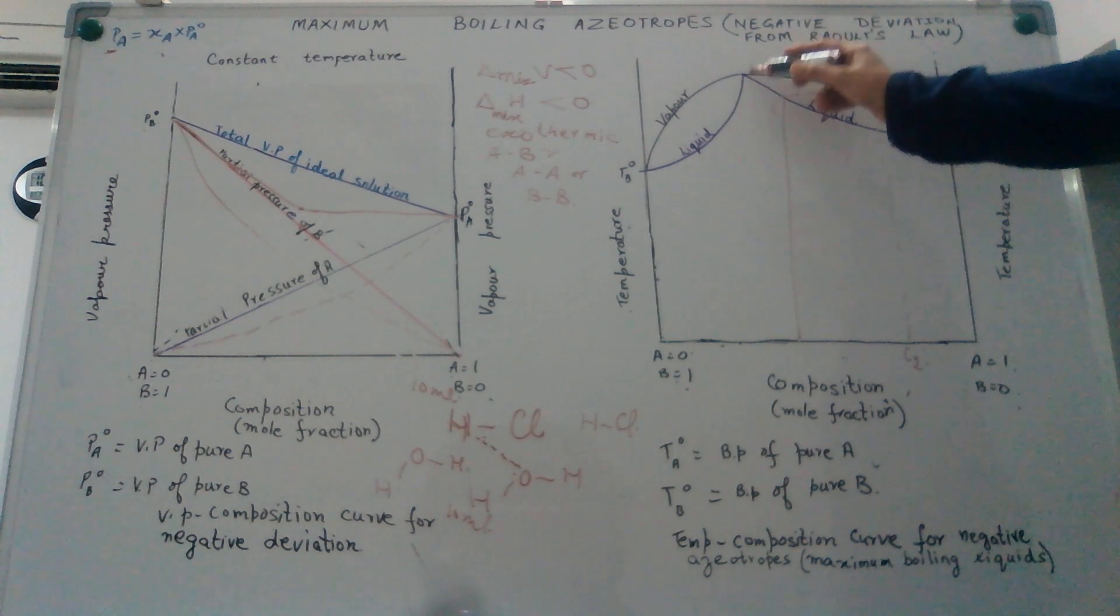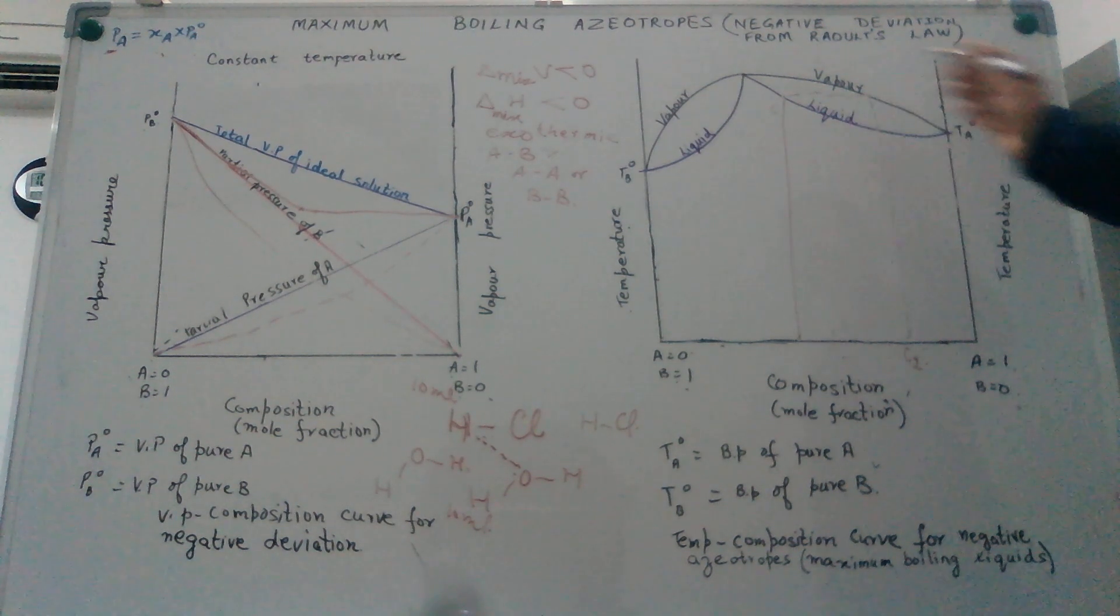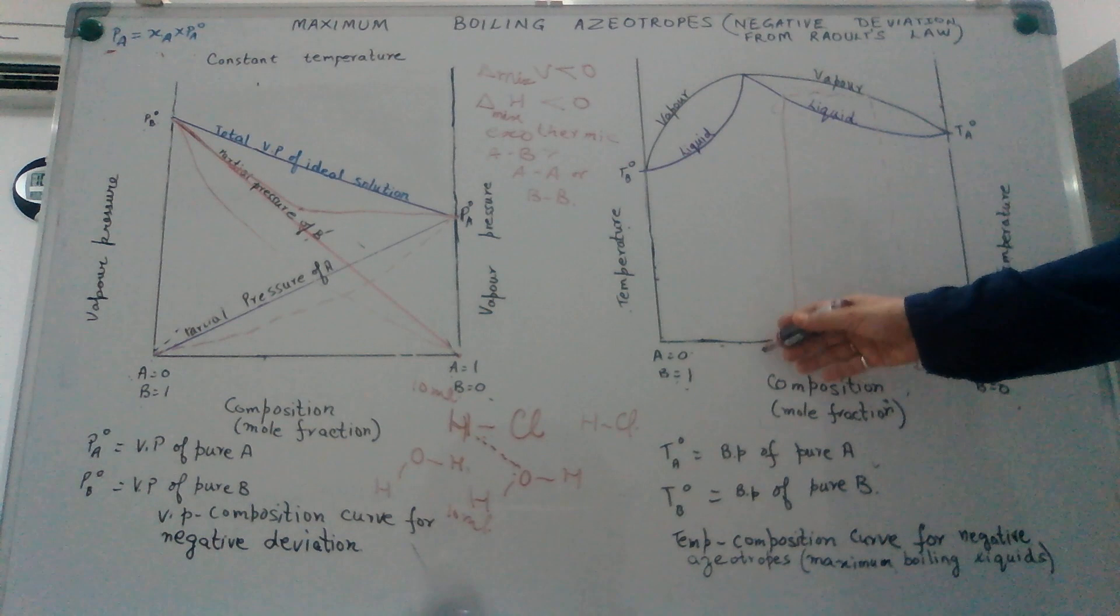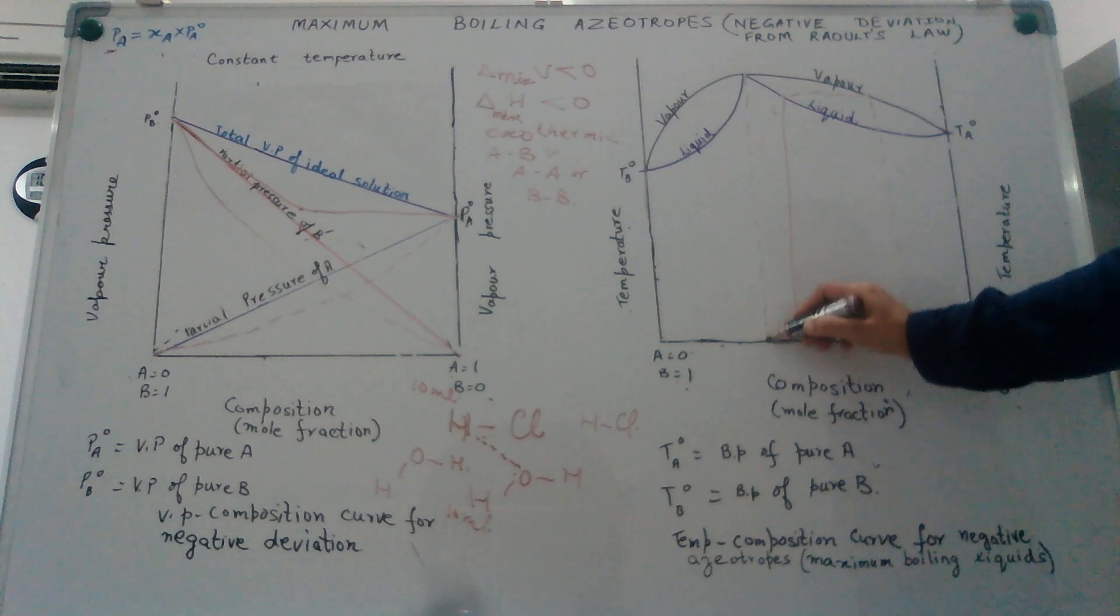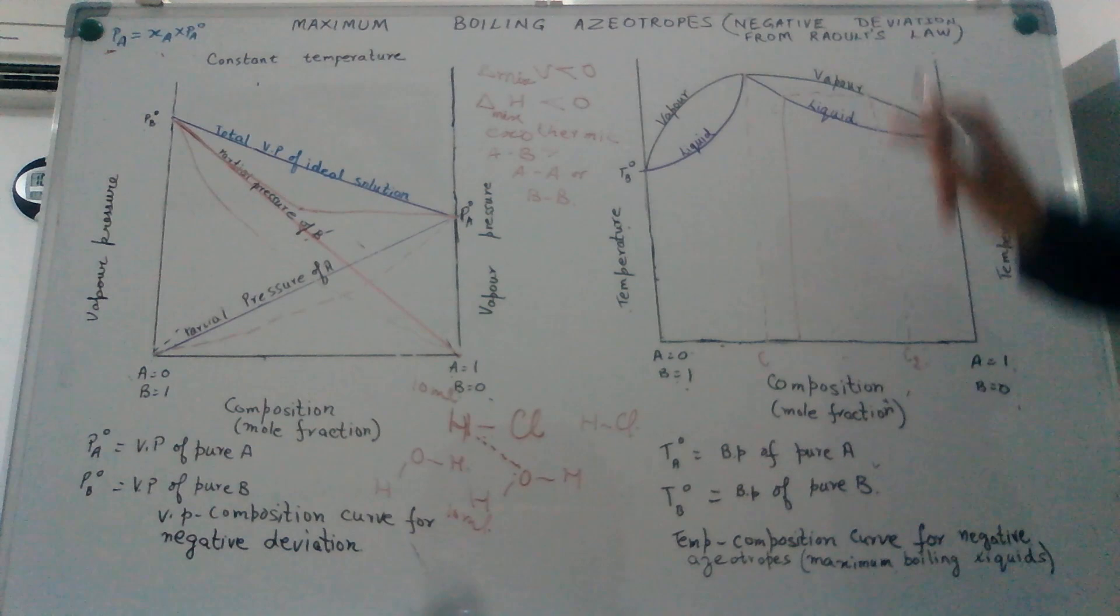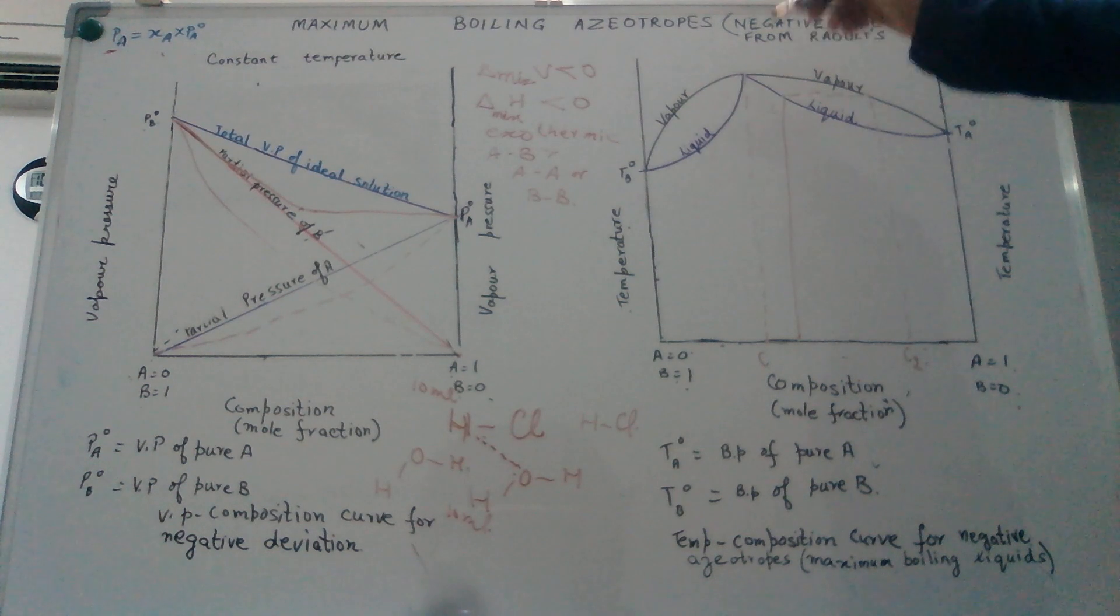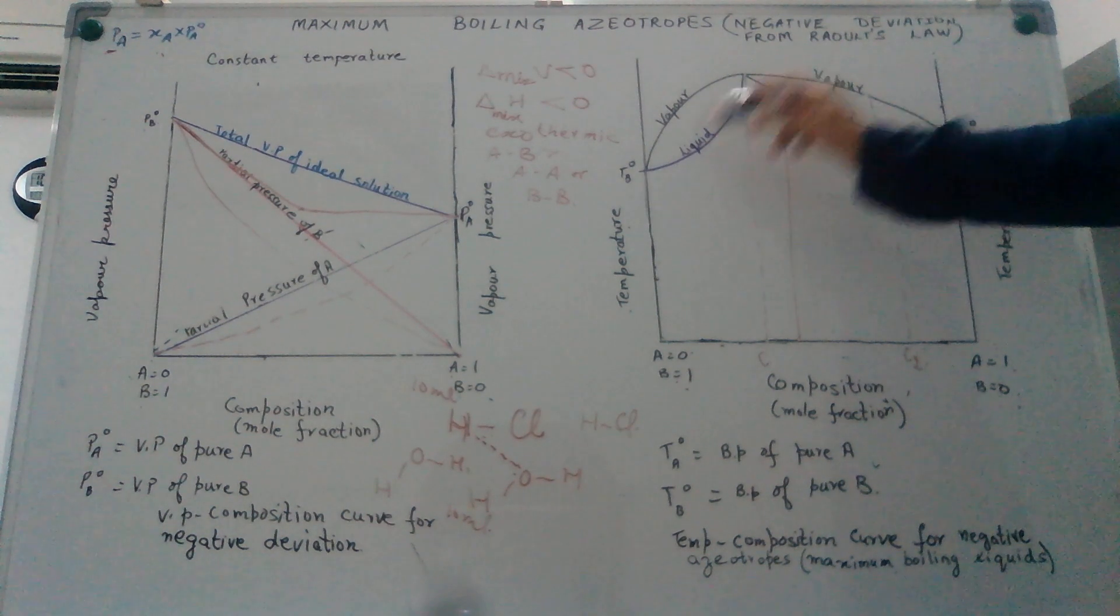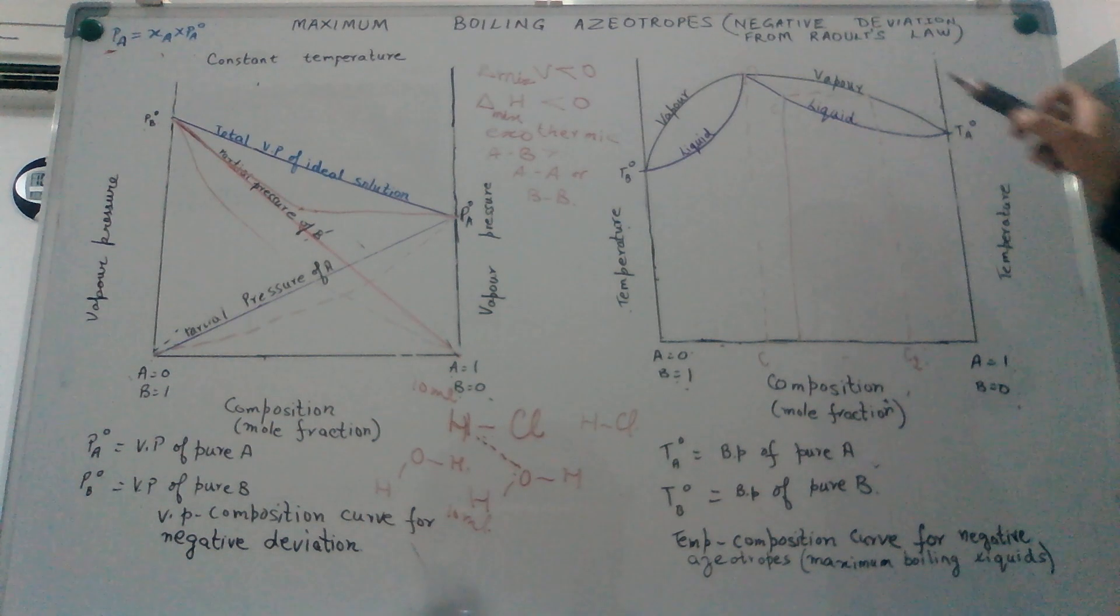On the other hand, this is for the vapor whereas the residue is becoming richer in component B. Our vapor is tending towards A whereas our residue is moving towards a situation where we have a constant boiling mixture wherein the boiling point of component A and component B becomes equal. Since there is a peak, we call it maximum boiling azeotropes.